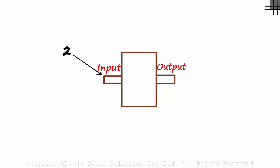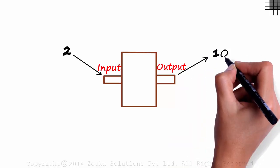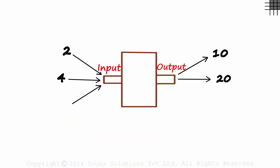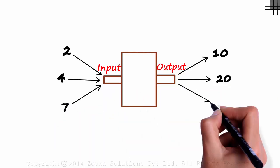If I feed 2 into this box, it gives us 10. When I feed 4 into it, it gives us 20. And when I feed 7, it gives us an output of 35.